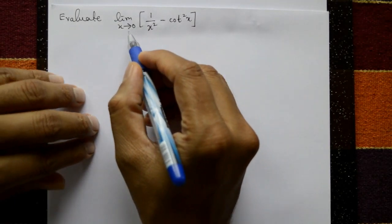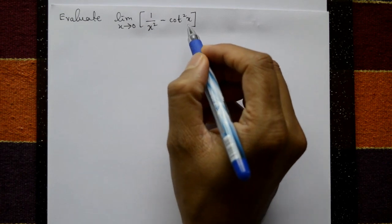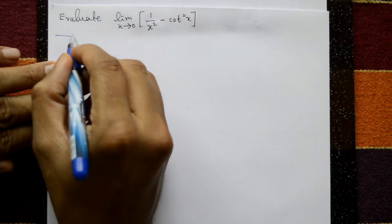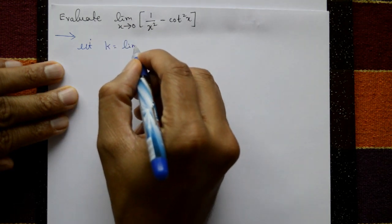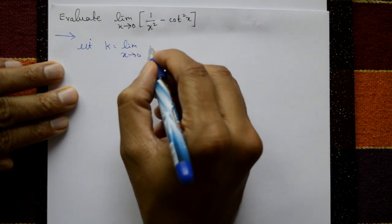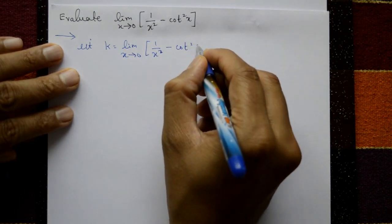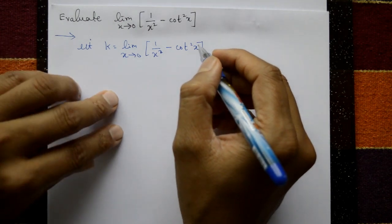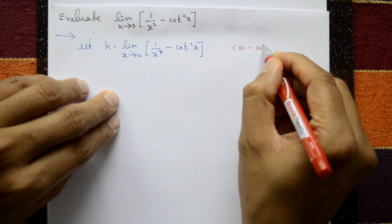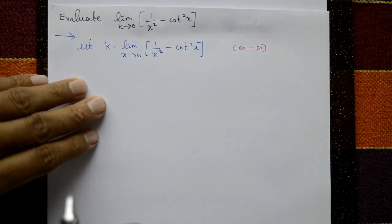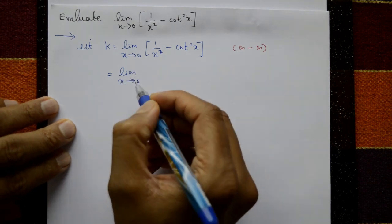Evaluate the limit as x tends to 0 of 1/x² minus 1/tan²x. Let k equal limit x tends to 0 of 1/x² minus 1/tan²x. Applying the limit gives infinity minus infinity.